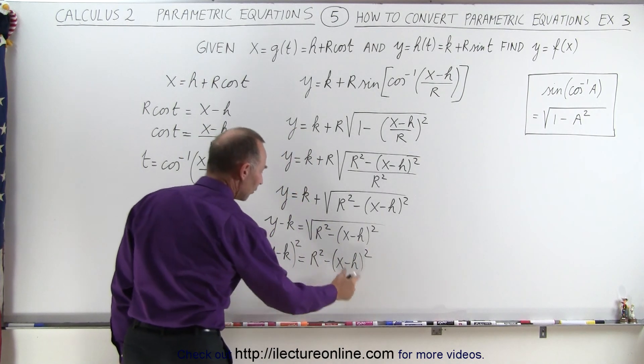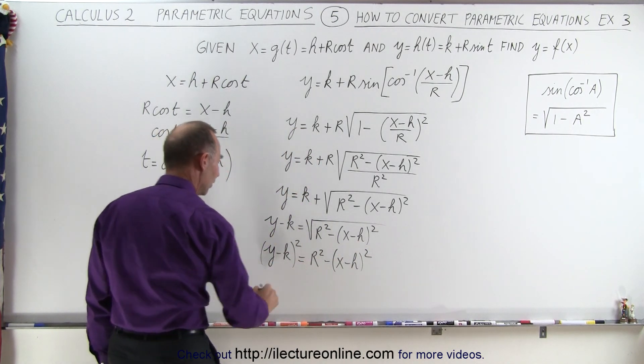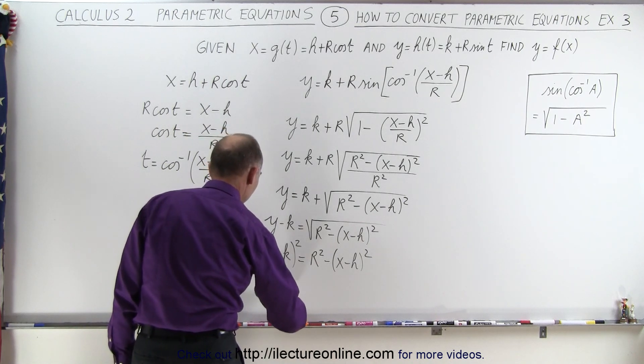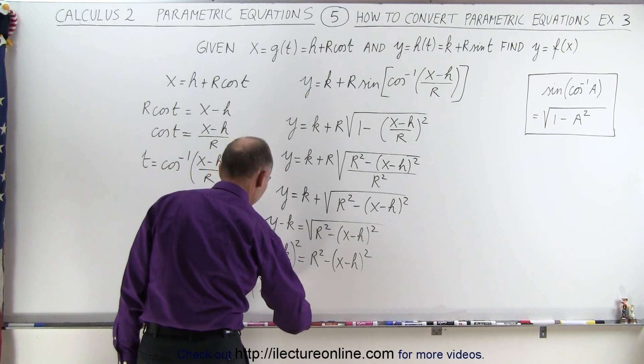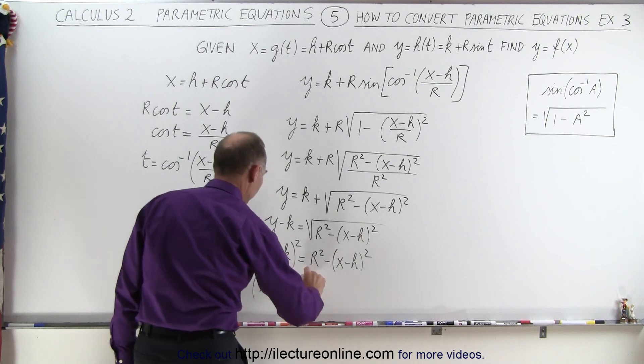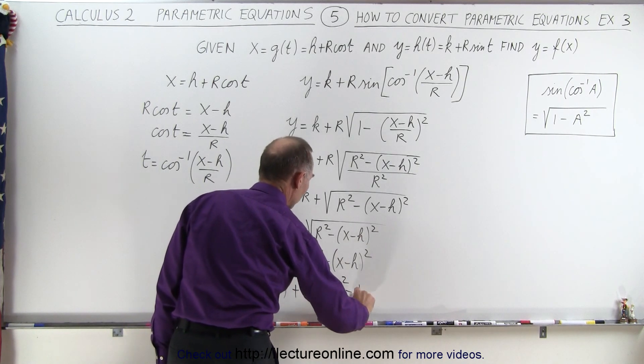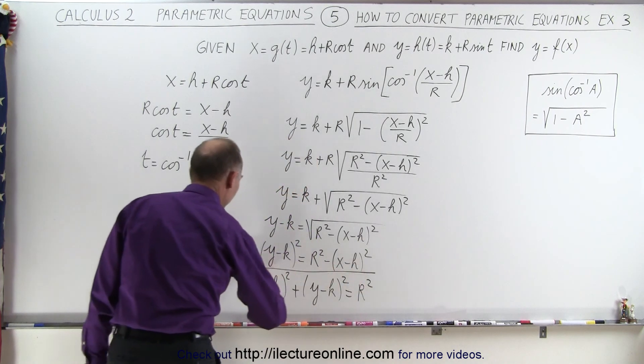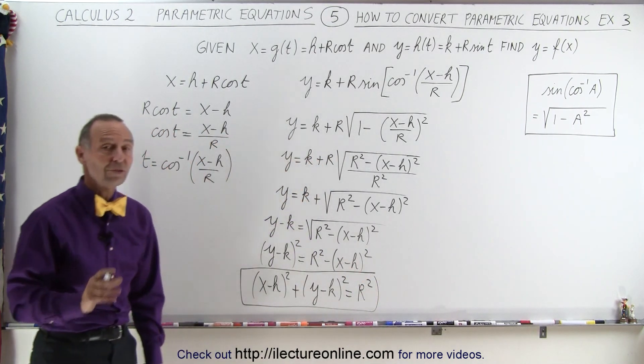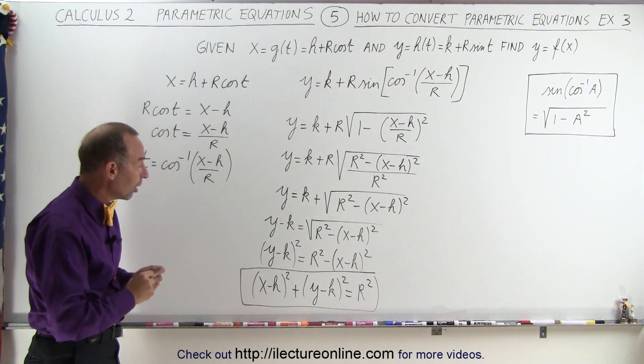And finally, we move this over to the other side. That becomes positive. So we end up with X minus H squared plus Y minus K squared is equal to R squared. And now we realize that this is also the equation of a circle with radius R.